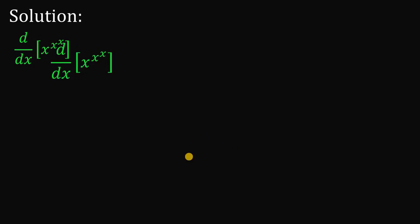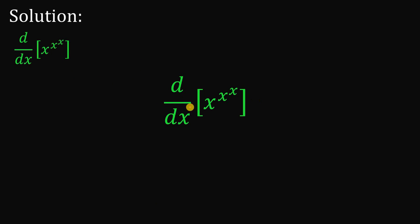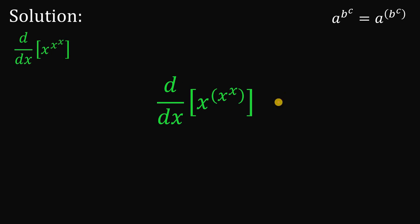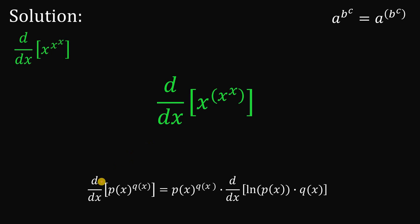First, let's get our function: x raised to x raised to x. Take note that if we have a raised to b raised to c, this can be written as a raised to the power of b raised to c. So x raised to x raised to x can be written as x raised to the power of x raised to x. To get the derivative of this, we will apply the generalized power rule, which states that the derivative of p(x) raised to q(x) equals p(x) raised to q(x) times the derivative of ln of p(x) times q(x).